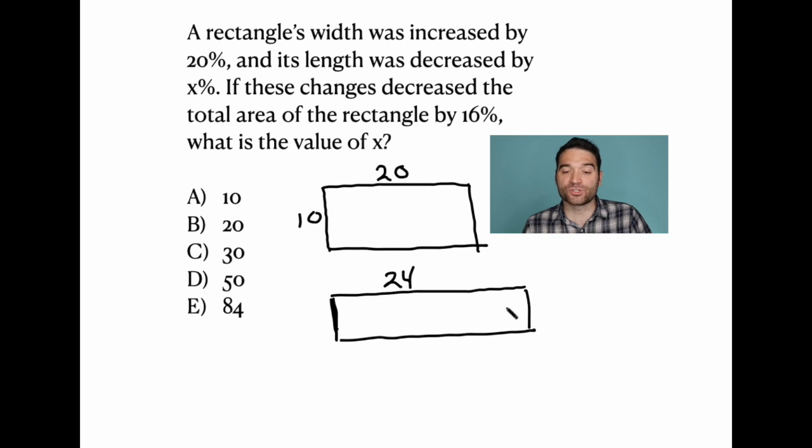And what we're told is that the result of this is that the area of the new rectangle is 16% smaller than the older one. So what is the area of the older one? It's 20 times 10, so 200. 200 square inches or square feet. And if I decrease that by 16%, take my calculator, what's 16% of 200? 32. Subtract it out. That gets me to 168. So the area of this new rectangle is 168 square units.